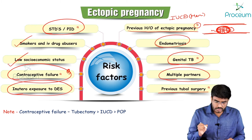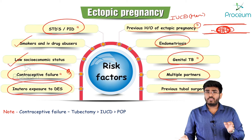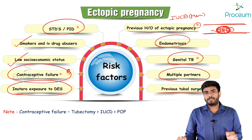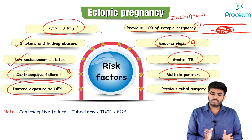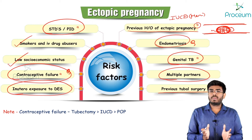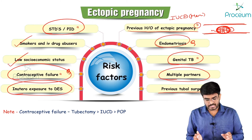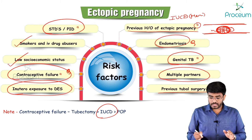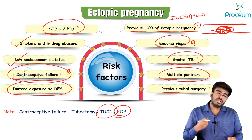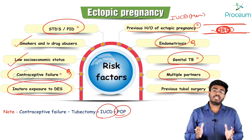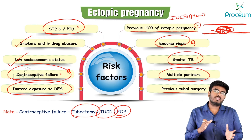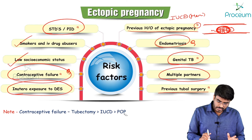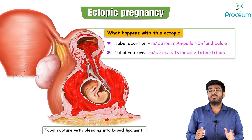In utero exposure to diethylstilbestrol is also a risk factor. It causes Müllerian anomalies, which can be associated with endometriosis, and endometriosis is a risk factor for ectopic pregnancy. Failure of tubectomy (tubal ligation) is another important risk factor that can also cause ectopic pregnancies.